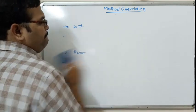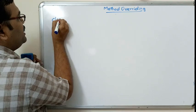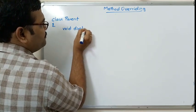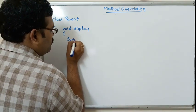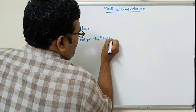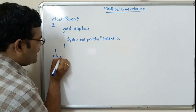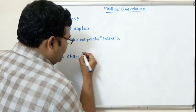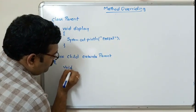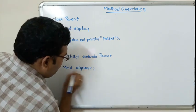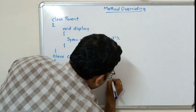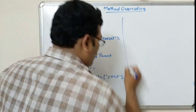Now let us see the implementation. I'm writing a class Parent, and inside it I'm writing the display function: System.out.println("Parent"). Then I'm writing a class Child which extends Parent — to implement inheritance. Inside the Child class I'm writing the same method: void display with System.out.println("Child"). Then I'm writing the main function.